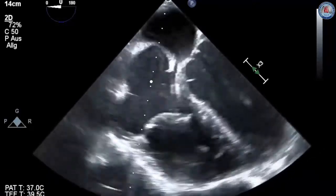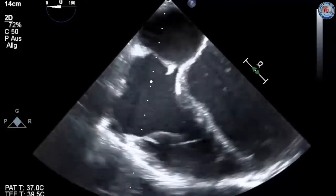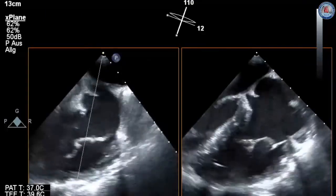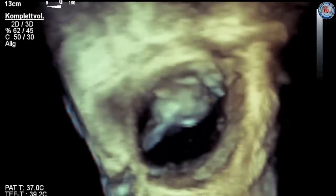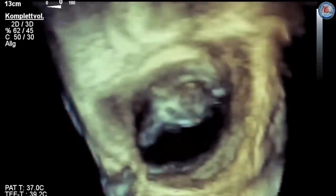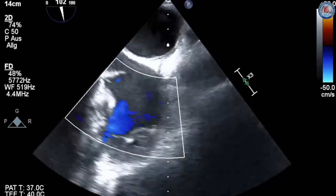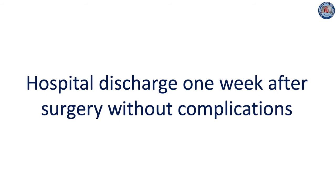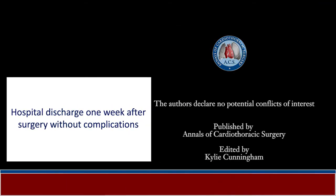If repair is not possible or if the final result is unsatisfactory, tricuspid valve replacement is required. Perioperative rates in patients with biological or mechanical prosthesis in the tricuspid position are comparable. Therefore, we prefer the implantation of a biological prosthesis, because lifelong anticoagulation may be problematic in patients in whom intravenous drug use is predominant and non-compliance is a major issue. In patients in whom implantation of a prosthetic valve is not desired due to previous multiple recurrences of tricuspid valve infective endocarditis, tricuspid valvectomy without valve replacement may be an alternative. Finally, our patient recovered without complications and was discharged one week postoperatively.